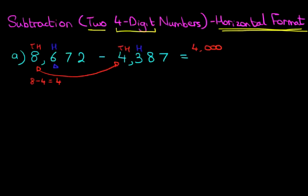So we've got 6. The hundreds we've got is 6 - 3. 6 - 3 is 3. So we've got 300. Nice and simple so far.